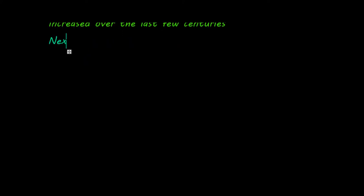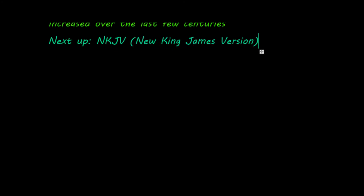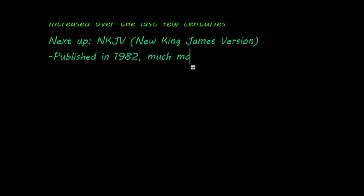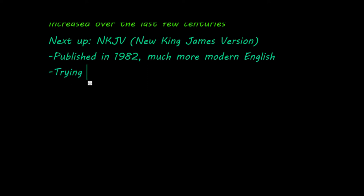Next up is the NKJV, the New King James Version. It was first published in 1982, and it is much more modern English. It is trying to be as good as the KJV, and at points has even improved.